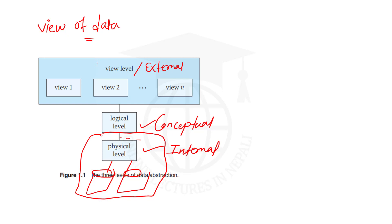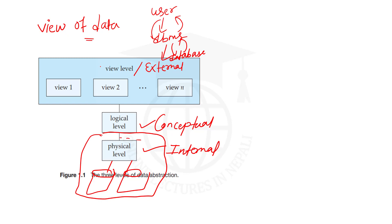The DBMS provides a medium for the user to interact with the database. The user request goes through the DBMS as a query, and DBMS processes it. The user provides a view-level request, which connects to the logical level and then the physical level — this is the flow. There are different users and there are different views for each user.